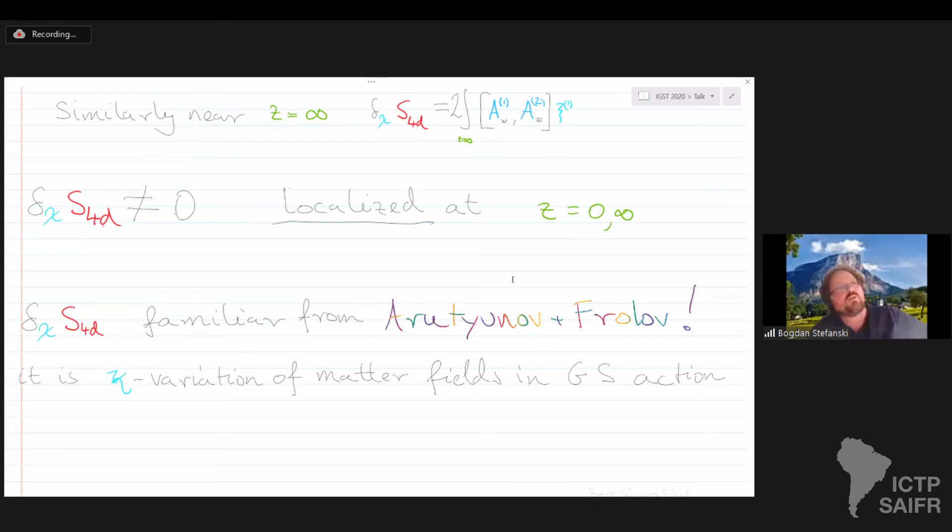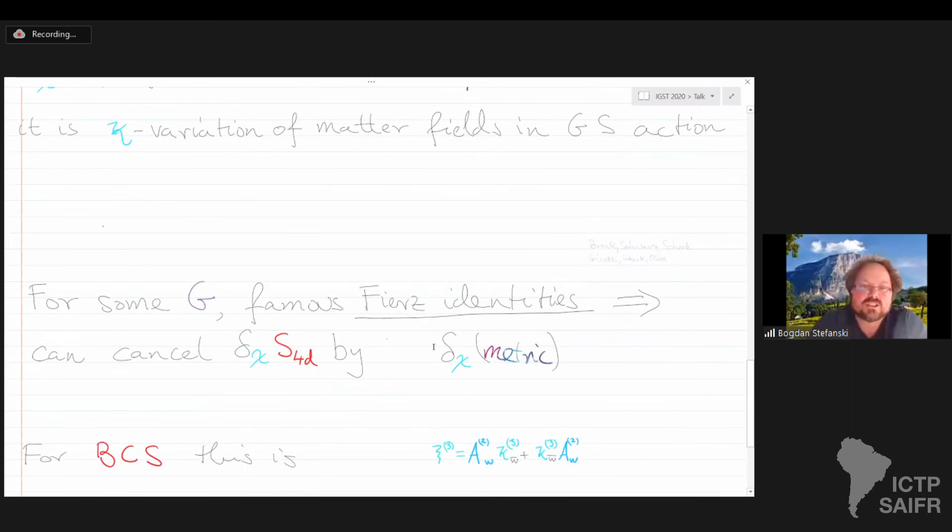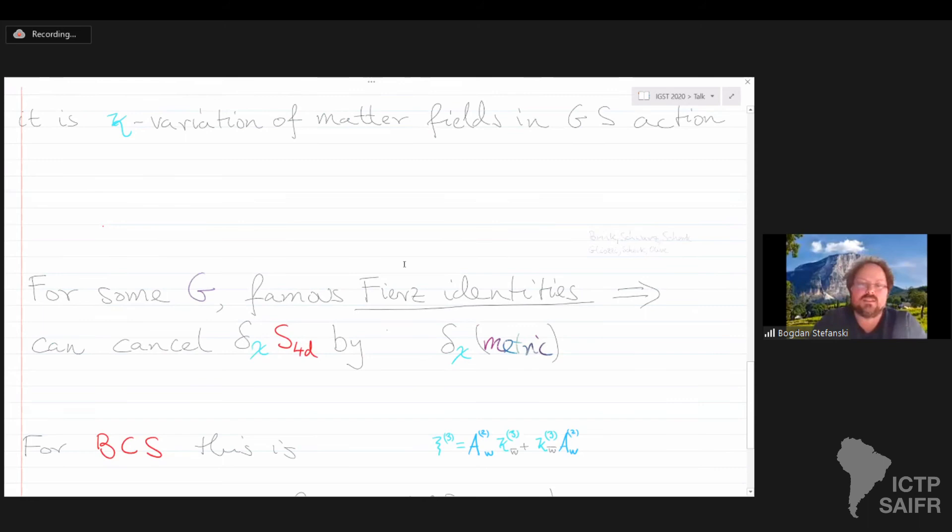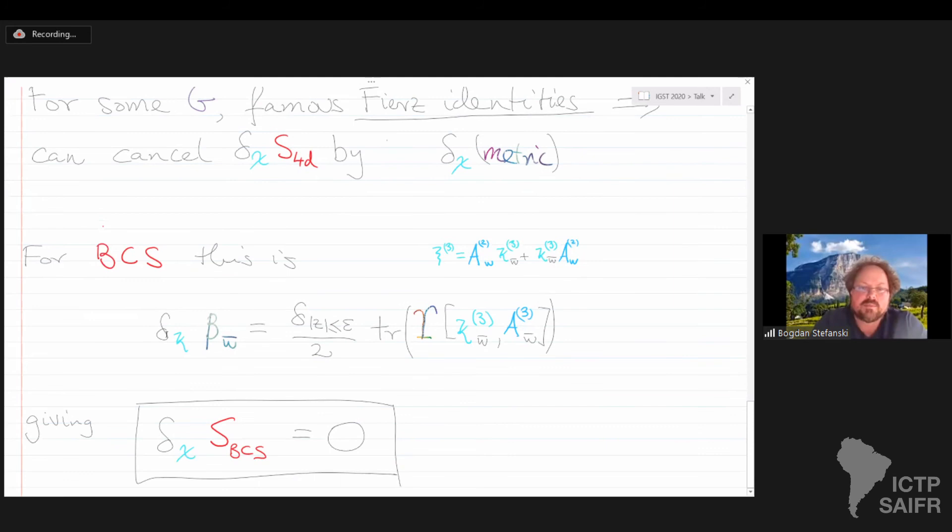So, singular gauge transformations near Z equals zero and infinity mean that the action is not invariant near these points. But anyone who is familiar with this really beautiful review by Arutyunov and Frolov immediately will recognize, wait, I know what this is. These guys are precisely the kappa variations of the matter fields in the Green-Schwarz action. So, remember, when you're checking whether the Green-Schwarz action is kappa invariant, you first vary the matter fields, in other words, the bosons and the fermions. And that gives you a non-zero answer. And you might think, oh dear, it's a non-zero answer. Well, actually, it's fine. Because sometimes there are these special identities that come in, the really old ones by Brink-Schwarz-Scherk and Gliozzi-Scherk and Olive. And they make sure that you can cancel this variation from the matter fields by varying the metric. Okay. So now I have to skip a little bit and just show you. For us, the metric are these Beltramis. And the Beltramis have to vary under the kappa symmetry. Notice they vary as a singlet of the gauge group. And everyone that has read Arutyunov and Frolov will recognize the matrix Upsilon, which is, I think they call it the hypercharge. So it's just a constant PSU(2,2|4) matrix. And you end up with the BCS theory being gauge invariant under these singular gauge transformations, fermionic gauge transformations. That's the kappa symmetry.